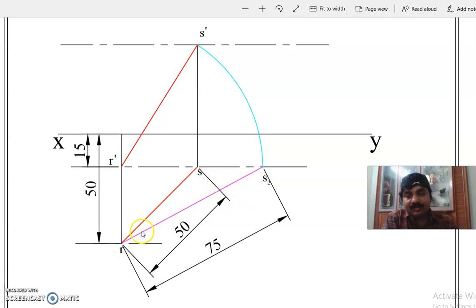RS2 is drawn in true length, taking the true length. Because we are thinking that the line is parallel to HP, so that RS2 will be appearing in true length. So that we can find the front view length. R dash S2 will be the front view length. So S is here.